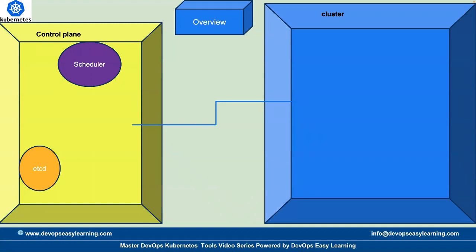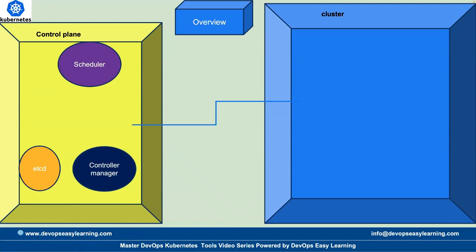We have the controller manager, which is the element that manages the state of the cluster. Then we have the API server, which is the element that allows communication — the API server is the element that allows communication with the cluster.